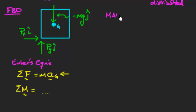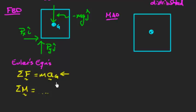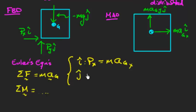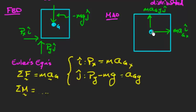Drawing the mass acceleration diagram, the center of mass has a horizontal component M·AGX in the i-hat direction and a vertical component M·AGY in the j-hat direction. In the i-hat direction: PX = M·AGX. In the j-hat direction: PY − mg = M·AGY. I have two equations but the accelerations are also unknown, so I need the moment equation to find AGX and AGY.